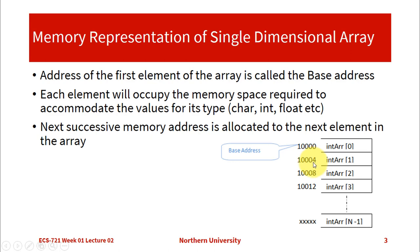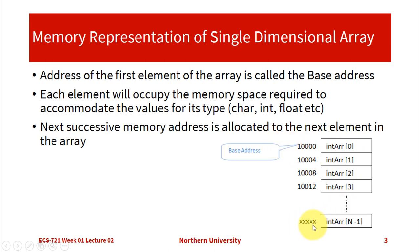The next address starts from 10,004, and it also occupies four bytes: 10,004, 10,005, 10,006, and 10,007. Then the next consecutive address will be 10,008. This is how the single dimensional array is stored in computer memory. This fragment represents the computer memory where we store the elements of the array. This is the base address, and the last address is usually size minus one. So this is the single dimensional array representation in computer memory.